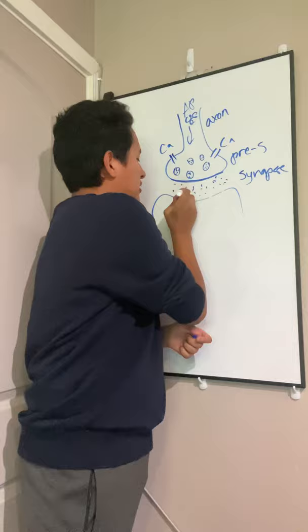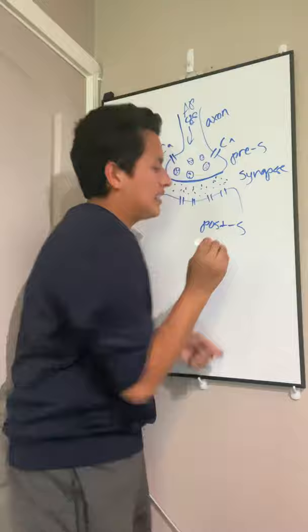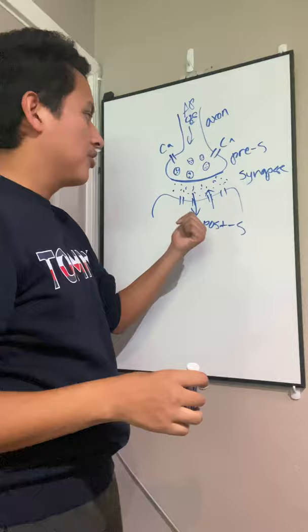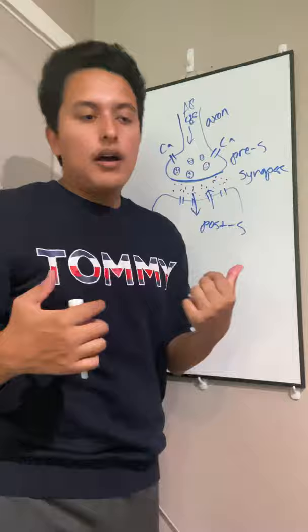These neurotransmitters bind with the receptors on what we call the post-synaptic neuron. They bind with the receptors and allow ions to go in and out of the post-synaptic neuron. This produces inhibitory potential and excitatory potential.